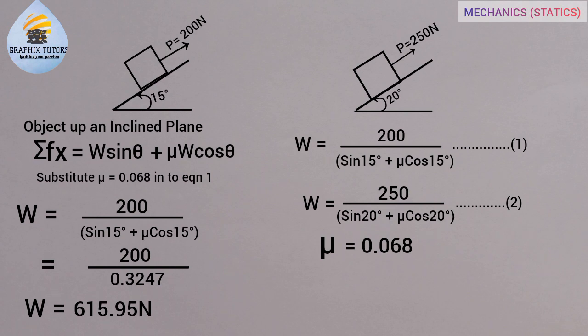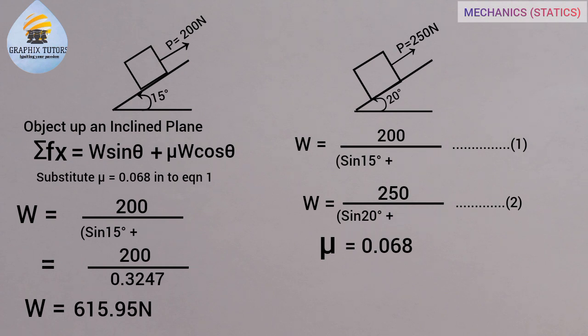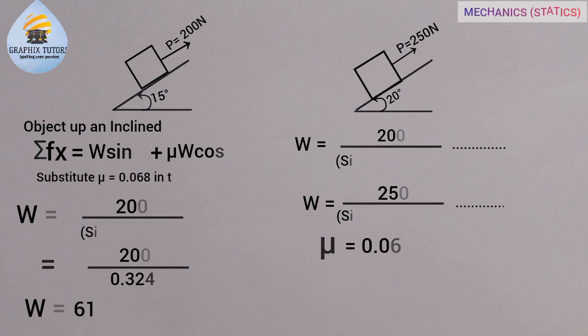So the weight of the body is 615.95 Newton and the coefficient of friction is 0.068. If you found this video helpful, please don't forget to click the subscribe button, like, comment, and share the video. Thanks for watching.